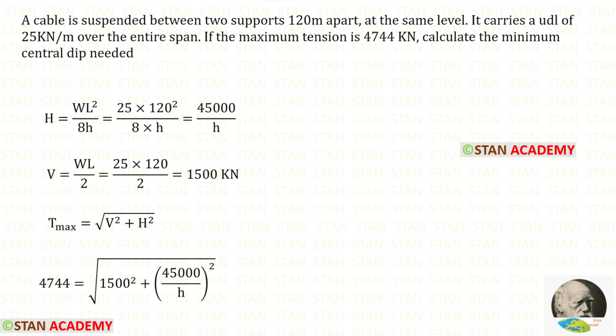We know the formula to find the vertical reactions on both of the supports, i.e. W L upon 2. Let us apply W and L. For the vertical reaction V, we will get 1500 kilo Newton.